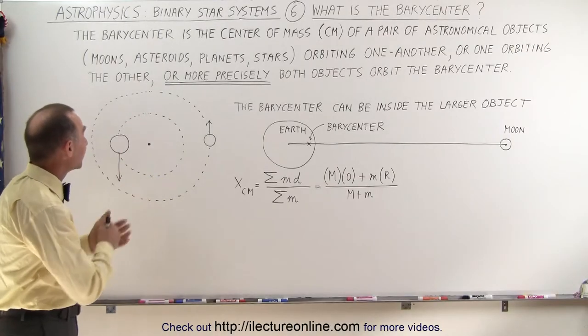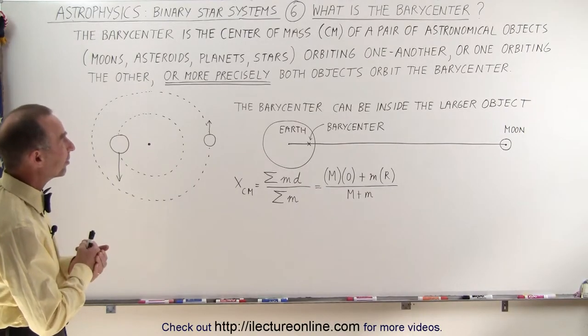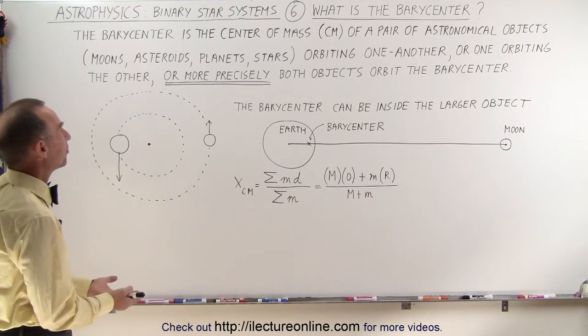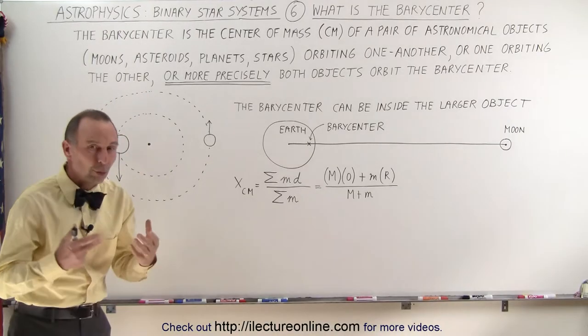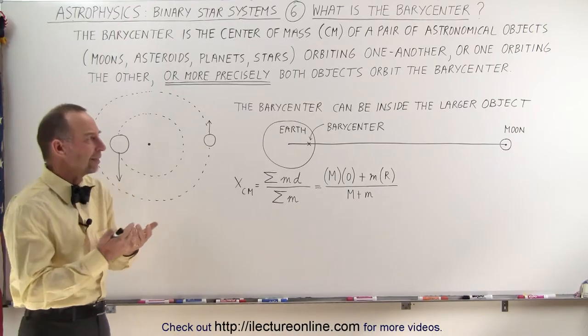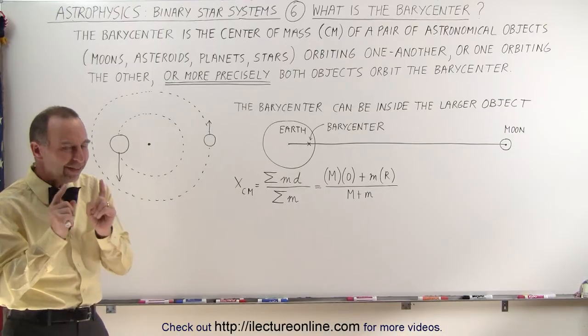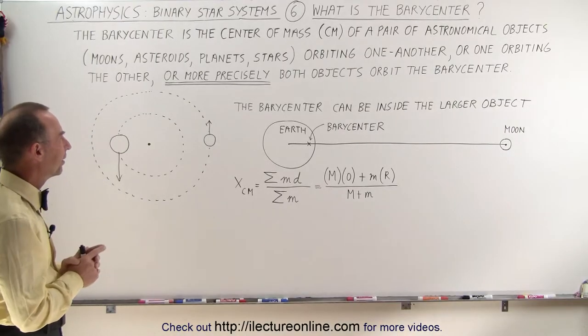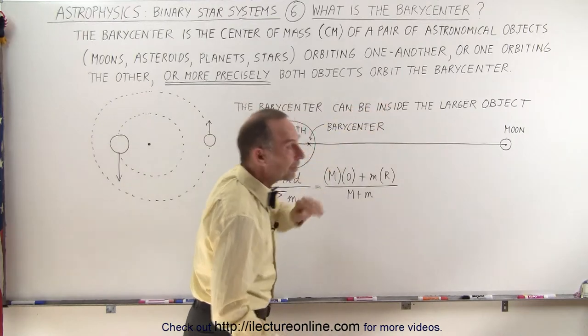The barycenter is the center of mass of a pair of astronomical objects, such as moons, asteroids, planets or stars, that orbit one another. That's typically the way we say it - the moon orbits the Earth, the Earth orbits the Sun - but that's not precisely correct. More precisely, both objects orbit the barycenter.